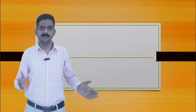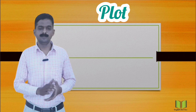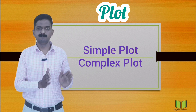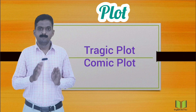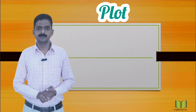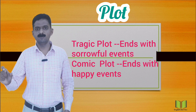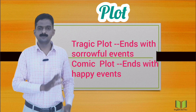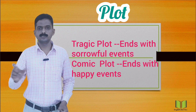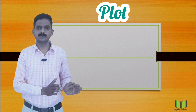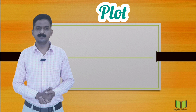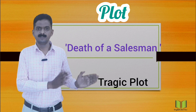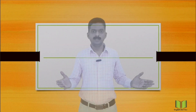The first element of Drama is Plot. Like a novel, it has types — simple or complex. Plot may be tragic or comic. A plot which ends with sorrowful events is called a tragic plot, and a plot which ends with happy events is called a comic plot. According to Aristotle, plot is more important than characters. For example, Arthur Miller's Death of a Salesman has a tragic plot.